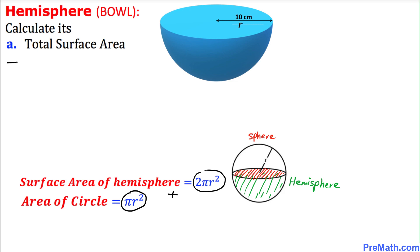So therefore the total surface area of this shape is going to be 2πr² plus πr², which makes 3πr². And we know that r in our case is 10 centimeters.